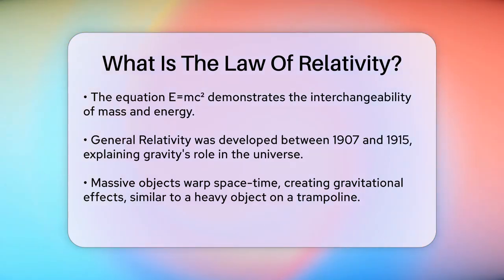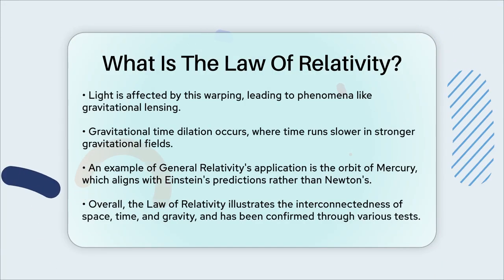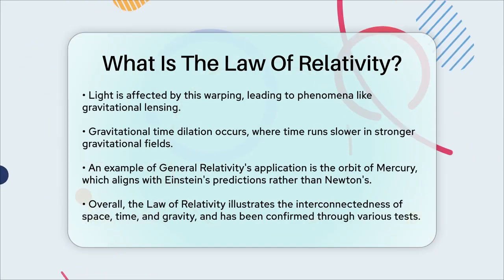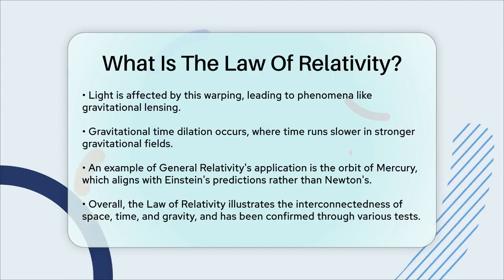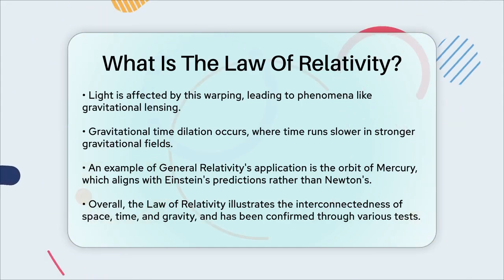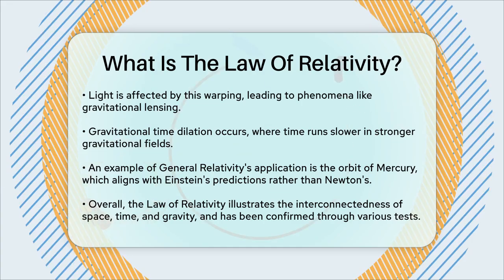An example to illustrate this is the orbit of Mercury. According to Newton's laws, Mercury's orbit should behave in a certain way, but there was a discrepancy that Einstein's general relativity explained perfectly. The curvature of spacetime around the Sun affects Mercury's orbit in a way that matches Einstein's predictions.